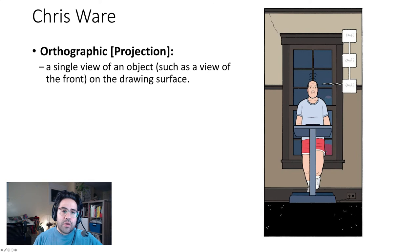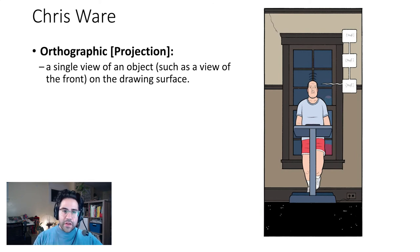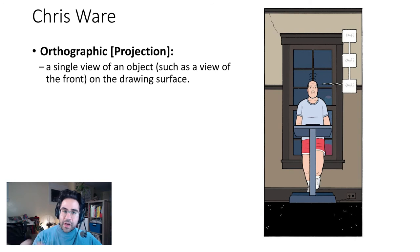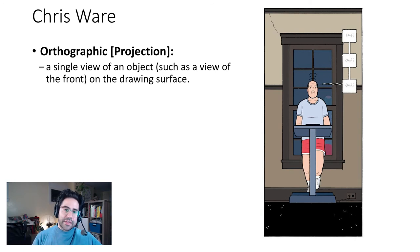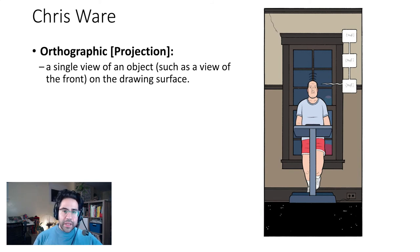We could also see an orthographic projection, and this is just a single view of an object, such as the view from the front on the drawing surface. So we're not really getting the views of the sides of objects that we might get with axonometric or oblique projections.